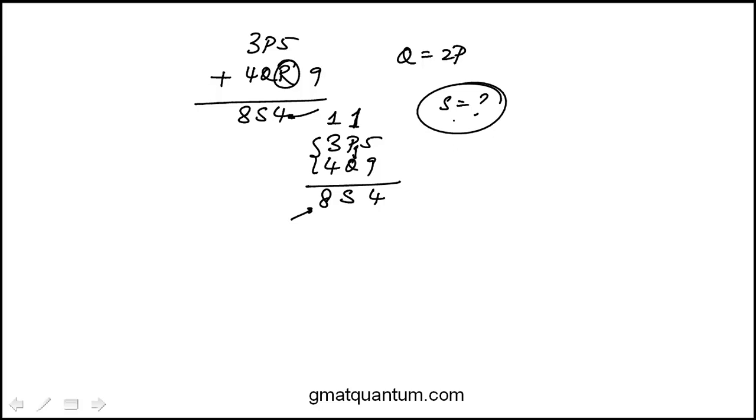So in terms of the other condition, q is 2p. So the possible values for p are 0, 1, 2, 3, and 4. It can't be 5 because q would be then 10, but it's a single digit. So I'll write the corresponding values of q: 0, 2, 4, 6, and 8.